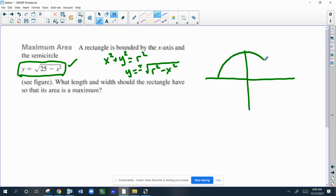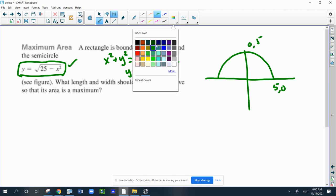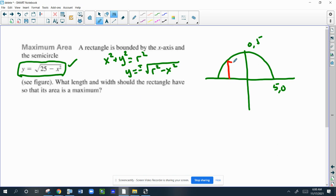So it would look like this. So that's 5, 0 right here. This is 0, 5 right here. So they're saying there's a rectangle here that's bounded by the x-axis, which means its base will be on the x-axis. And the top of it is bounded by the circle. So this rectangle would look like this. So what length would the rectangle have so its area is a maximum? So that's translating what the question is asking.